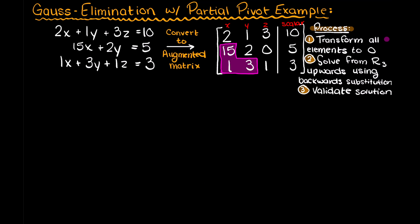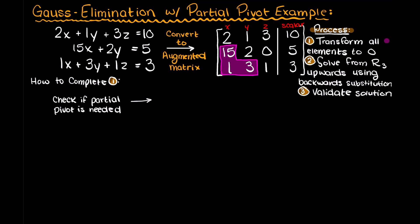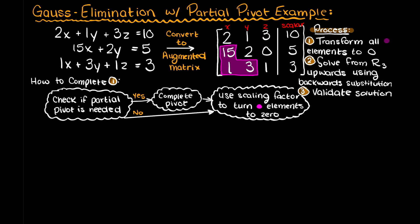But, how do we reduce all the pink elements to 0, especially since we are asked to use partial pivoting? Well, here is the procedure to complete step 1 of our process. Every iteration that we complete, we will begin by first checking if a partial pivot is necessary. If so, we will perform the partial pivot. If not, then we skip this step and then use our scaling factor to transform all of the pink elements to 0.